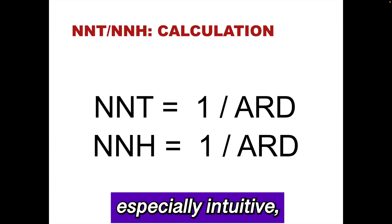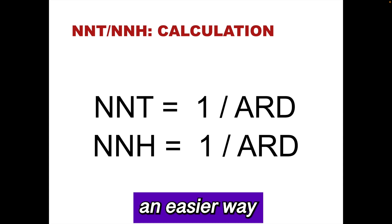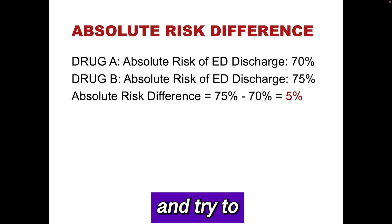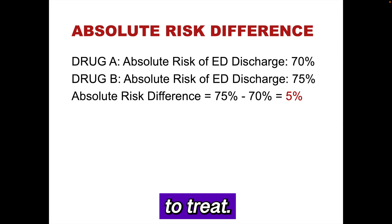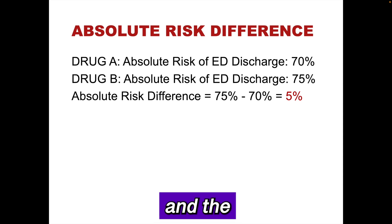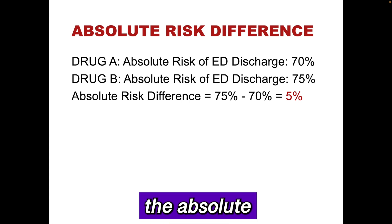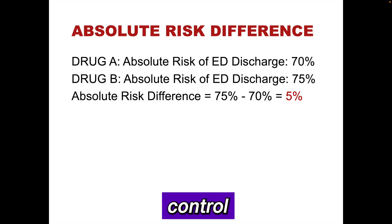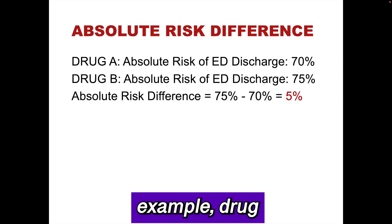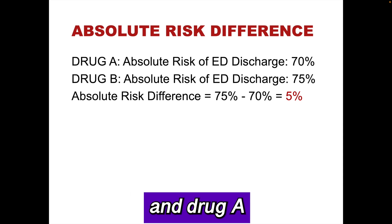This formula is not especially intuitive, but there is an easier way to understand it. Let's use an example of an absolute risk difference and try to figure out how it relates to the number needed to treat. The absolute risk of ED discharge with drug A is 70%, and with drug B is 75%. By convention, the absolute risk difference is the absolute risk in the control group minus the absolute risk in the intervention group, though this is not always the case. In this example, drug B is the control and drug A is the intervention.